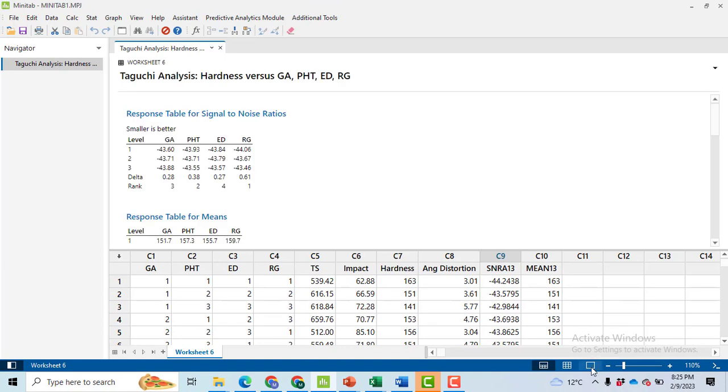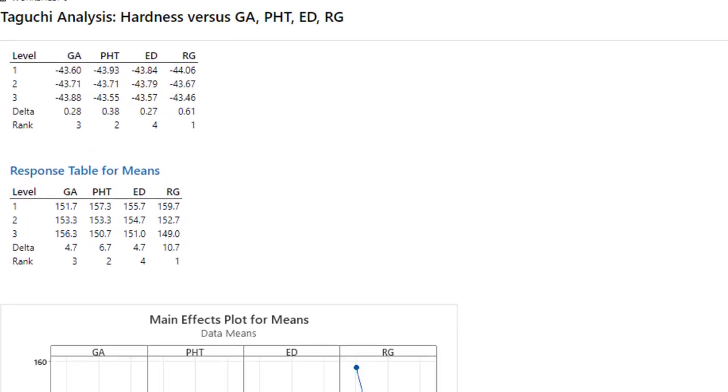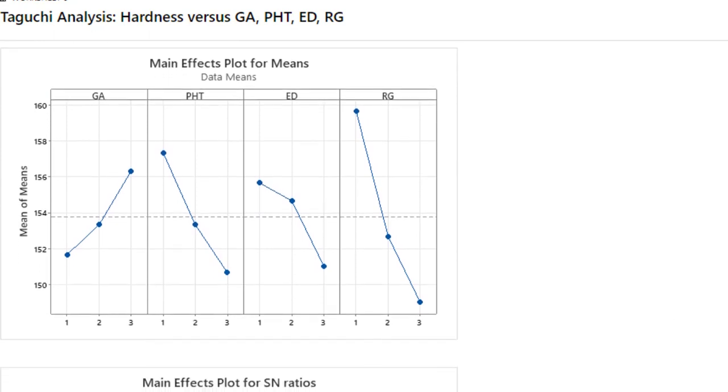You will get two different graphs. To view the graphs only, click on the output only button. Now in order to minimize, please remember that our criteria is smaller is the better. We will have to select those levels where our response variable value or mean is the least.